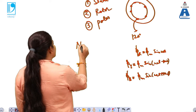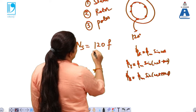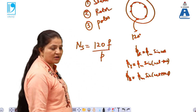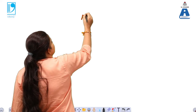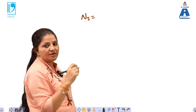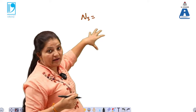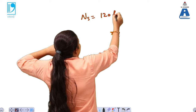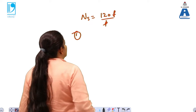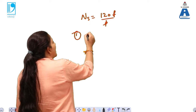The induction motor speed is given by Ns = 120F/P, where F is the frequency and P is the number of poles. Ns is the synchronous speed, since the three windings are synchronized with each other. Speed control is basically divided into four parts, the first of which is by controlling F — the frequency.